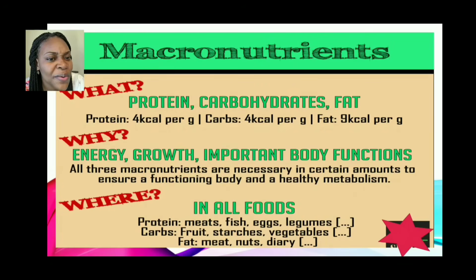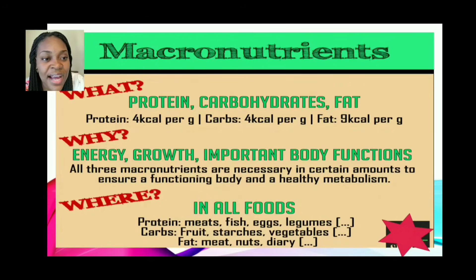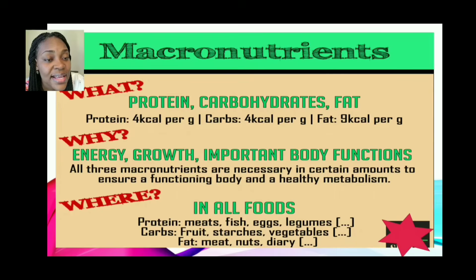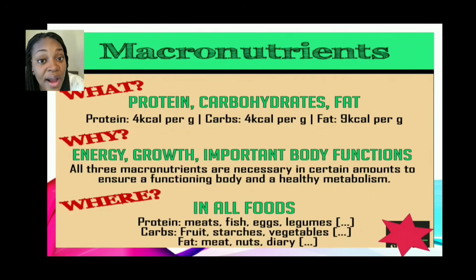Where are macronutrients found? Proteins are found in meat, fish, eggs, and legumes. Carbs can be found in fruits, starches, and vegetables. Fats can be found in meat, nuts, and dairy products. Each gram of protein gives us four calories, the same for carbs, while fat has nine calories per gram.